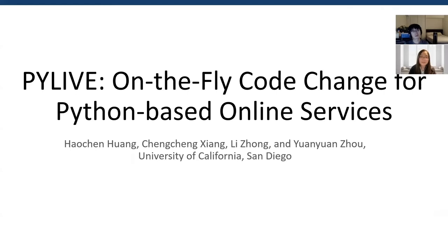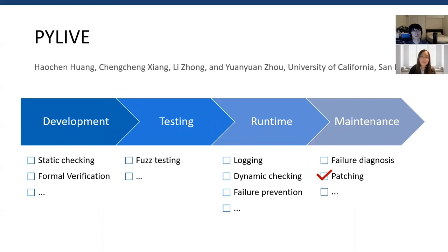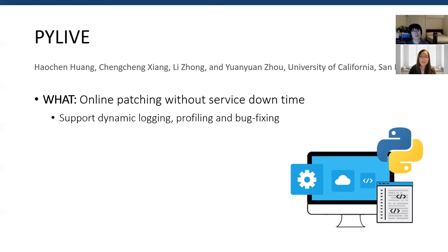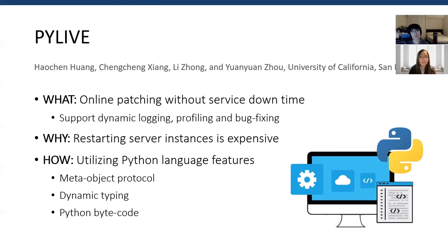Next, we will introduce the five papers in the correctness and debugging session. The first paper is PyLib: On-the-Fly Code Change for Python-Based Online Services, from UCSD. This paper is about patching during the maintenance phase. Updating online web services faces a problem: we want to enable online patching without service downtime, since restarting server instances is expensive. PyLib supports dynamic logging, profiling, and bug fixing by utilizing Python language features — the metadata protocol, dynamic typing, and Python bytecode.